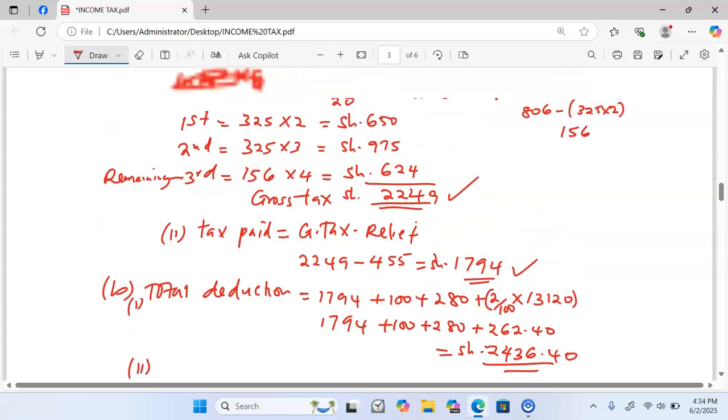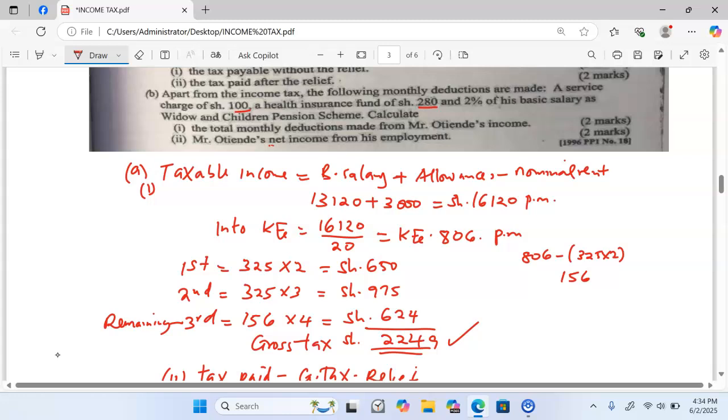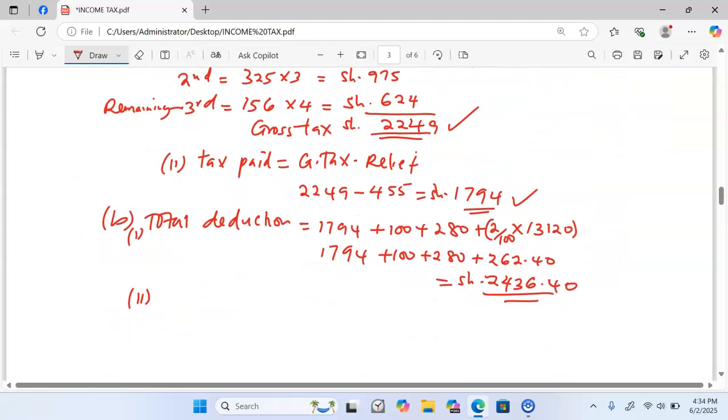Then B Roman 2 we are told to calculate Mr. Otyende's net income from his employment. How do we get net income? Net income is given by taking the taxable income minus total deductions. The total taxable income from the question was 16,120 minus a total deduction of 2,436, 40 cents. And this one is going to give us an amount equivalent to 13,683, 60 cents.